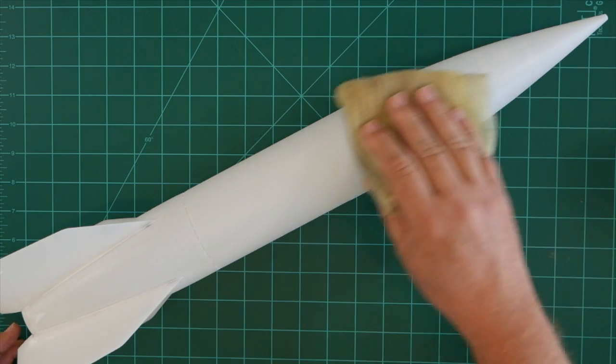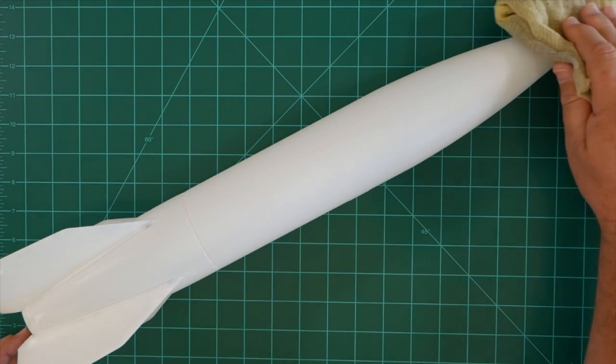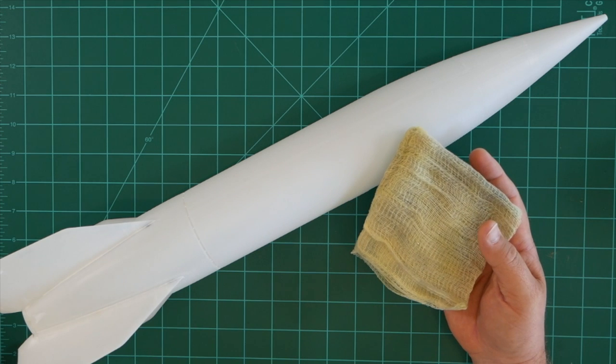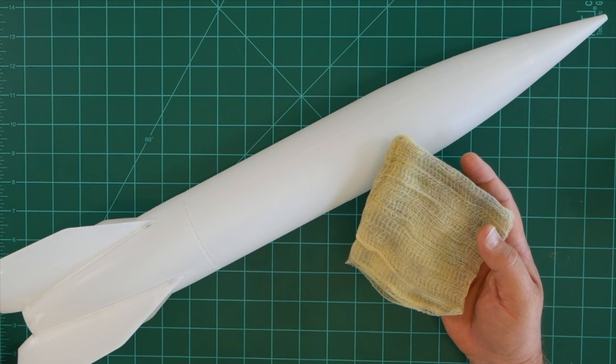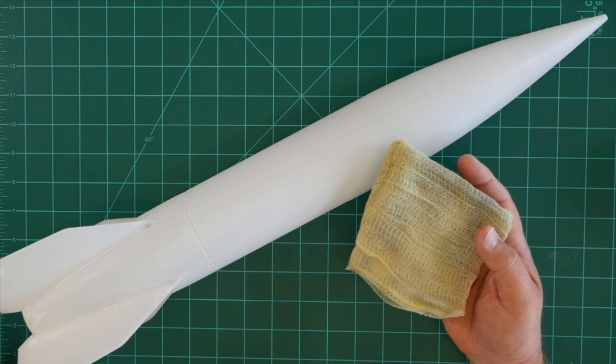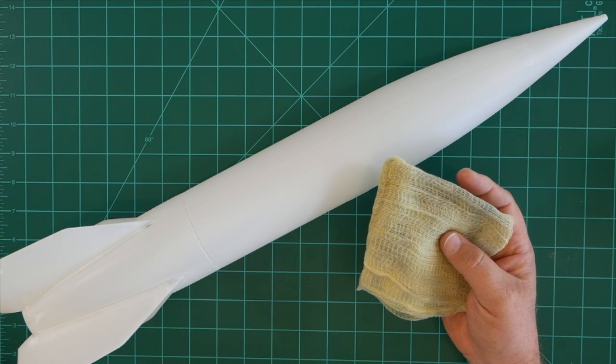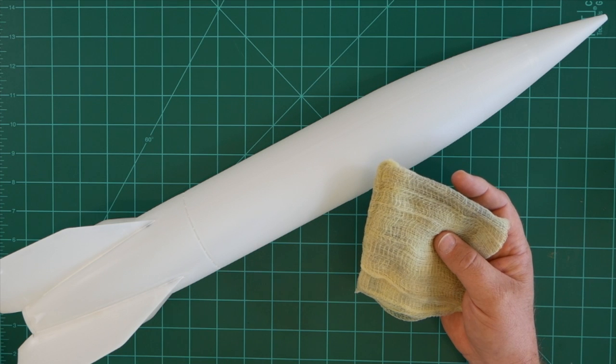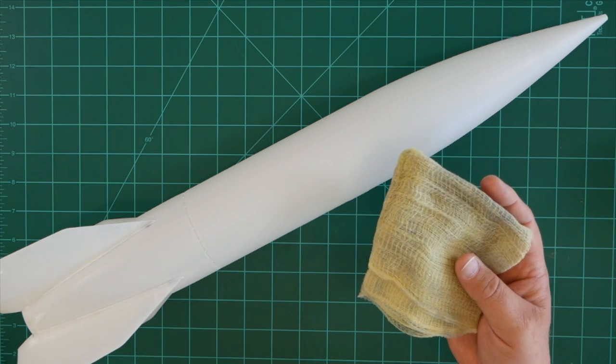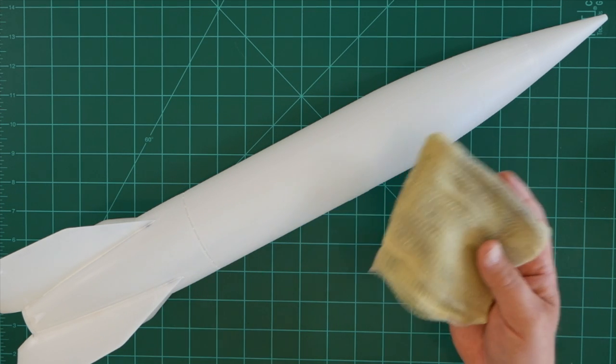Then we'll use a tack cloth to catch any stray dust that might still be on the surface. Using a tack cloth is just like using a lint brush on your clothing. It's a loosely woven cloth material that's impregnated with a mild adhesive and you can find them at your local hardware store. I picked mine up at Home Depot in a three pack for less than five dollars.